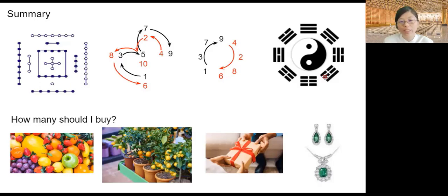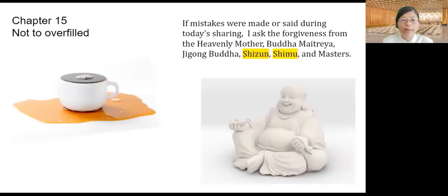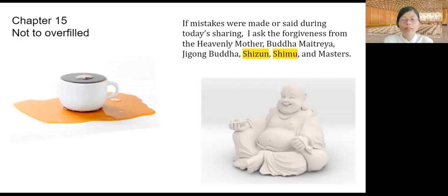If you give a pair of earrings to someone, it's better to add another item to make it three, because two is the beginning of duality. Three or five is good. In my next session I will do Chapter 15, titled 'Not to Overfill.' If mistakes were made or said during today's sharing, I ask forgiveness from the Heavenly Mother, Buddha Maitreya, Jigong Buddha, Si Zun, Si Mu, and Senior and Junior Masters. Thank you so much.